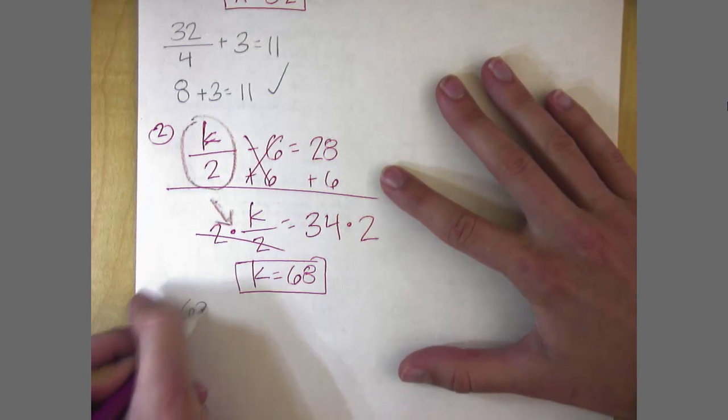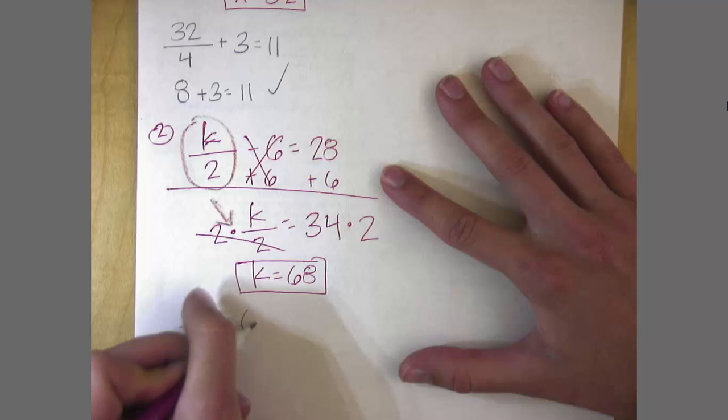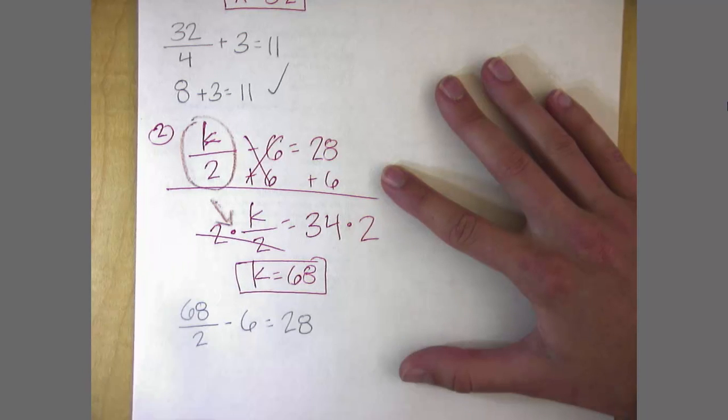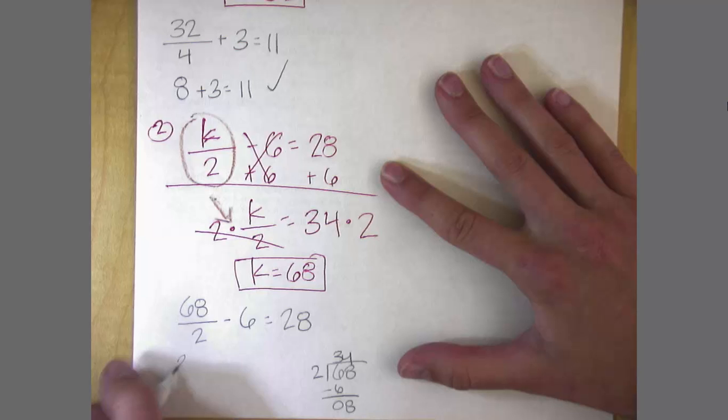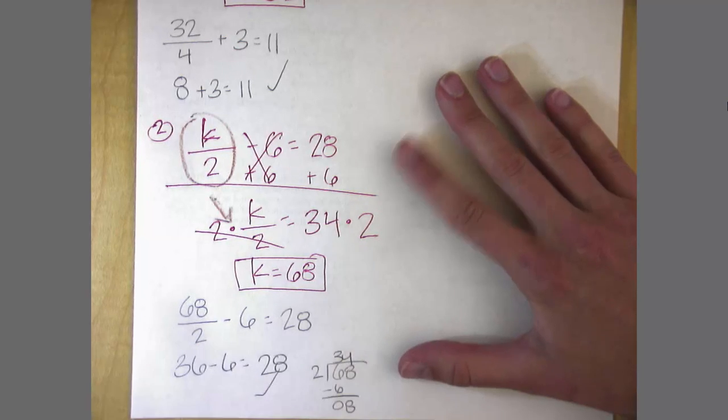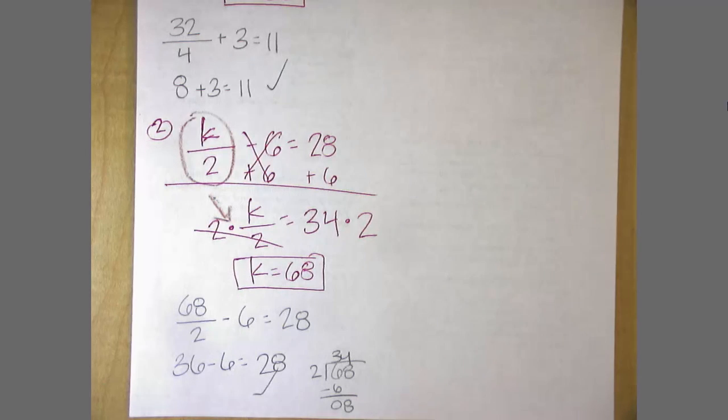Checking that, 68 divided by 2 minus 6. 68 divided by 2 gives me 34, and 34 minus 6 does equal 28. I love seeing checking your answers.